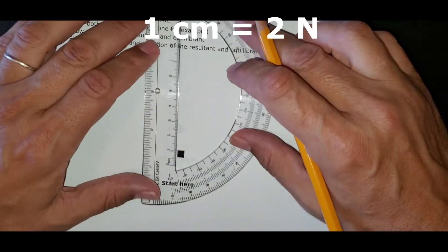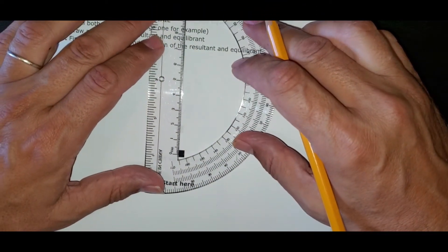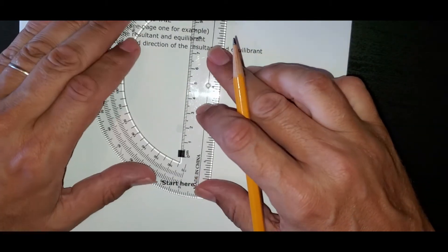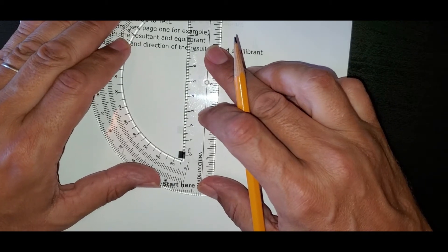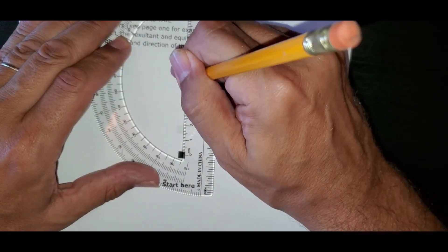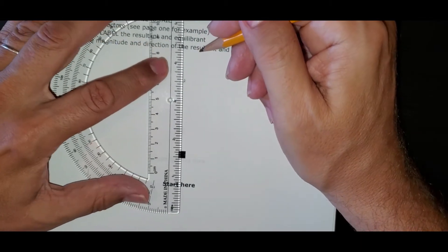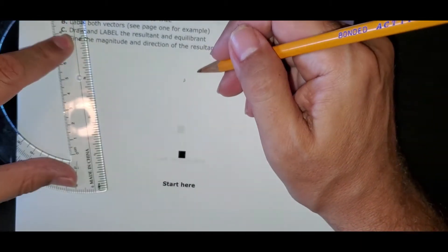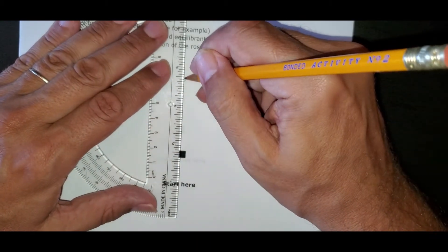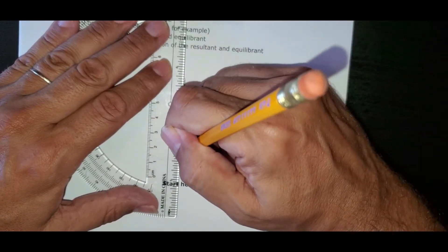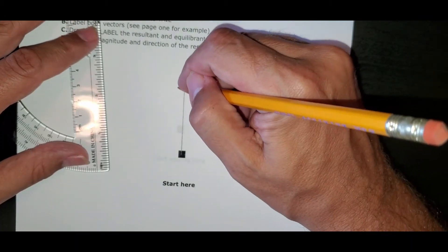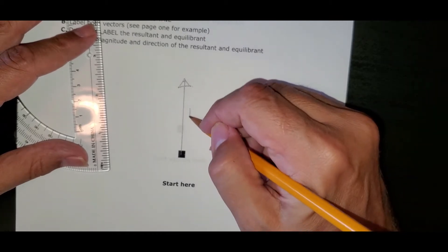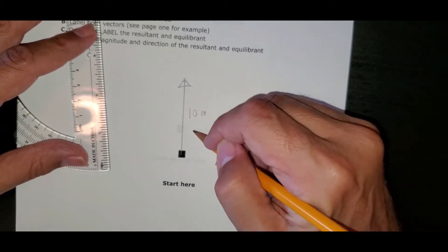So if every centimeter equals two newtons, then this should be five centimeters long. 10 newtons north. I'll start in the middle of the box, mark off five right there, and there's my 10 newton force going north. So it ends right there. In the middle of the box, straight up is north. We always draw our arrows just like that, and we always label 10 newtons north.